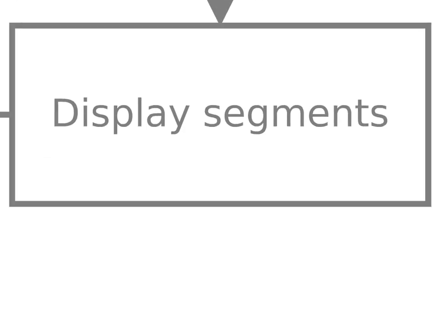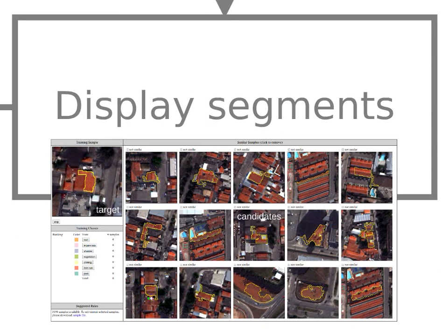The aim of this is to find a target and also find candidates for the training samples. When the user looks at this interface, the user can decide what is the class of the target, and when they define the class, all the candidates will be assigned to the same training class. Of course, there may be some wrong candidates, and the user can go and remove the incorrect ones from the sample selection. With one click, the user can select up to 16 segments, for example. One purpose here is to speed up the sample selection.